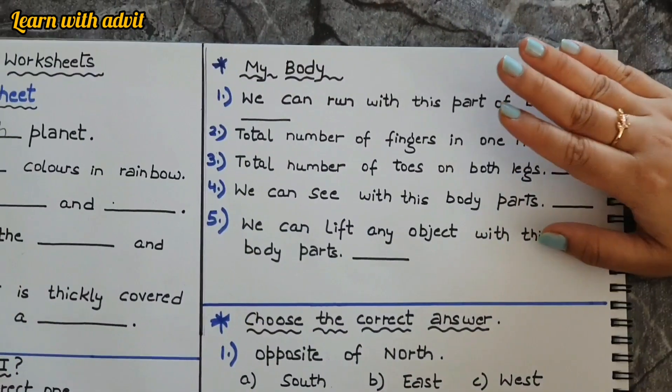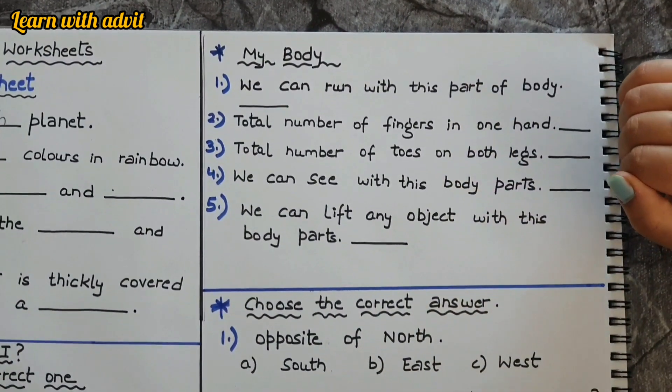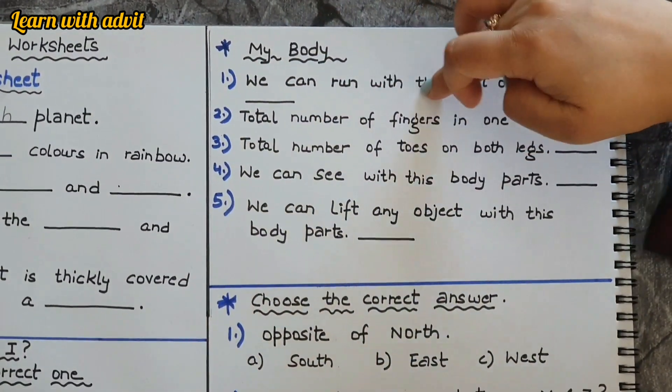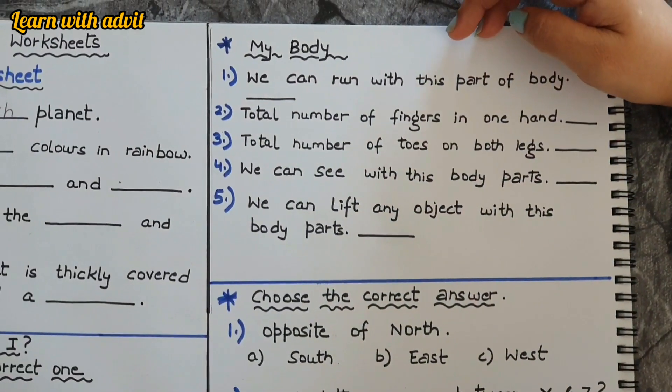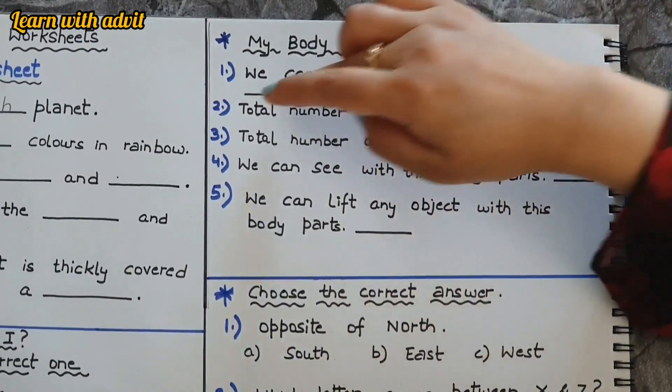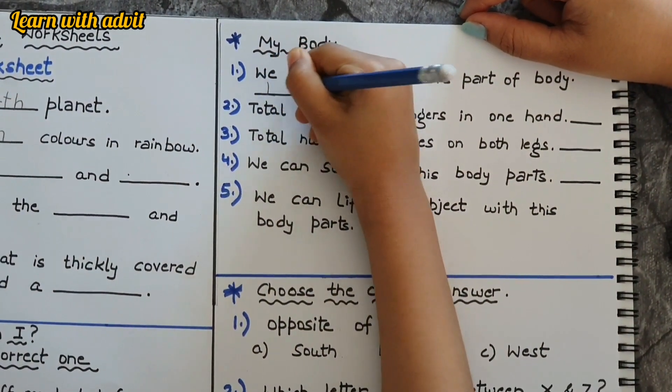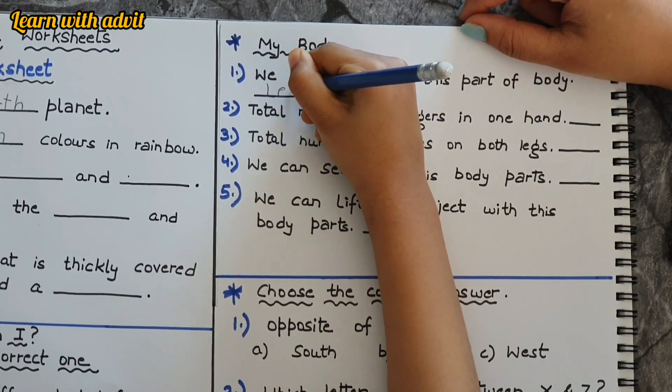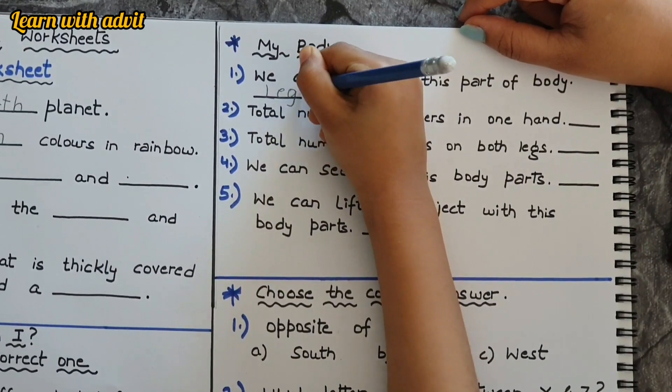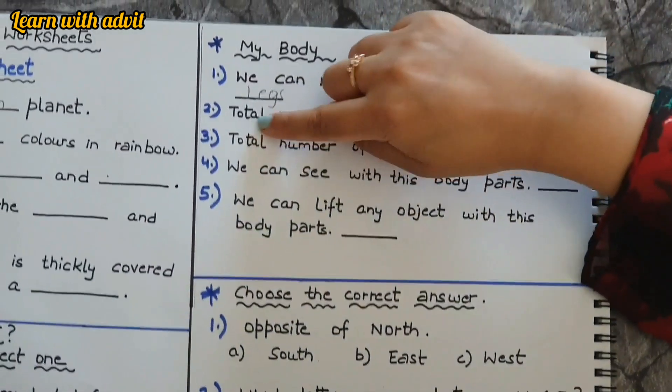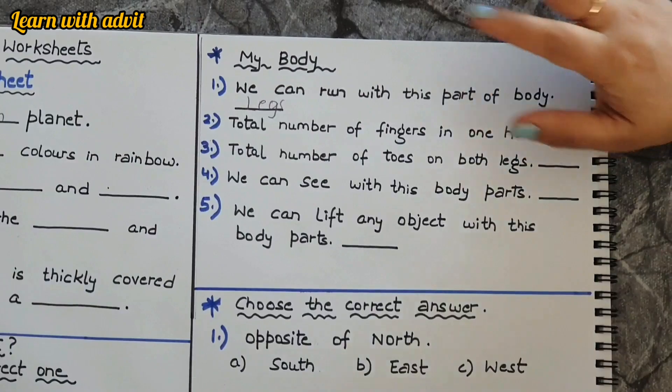Now there's some questions about my body. We can run with this part of our body. We can run with legs. Write it down, L-E-G, very good. Total number of fingers in one hand? Five, very good.